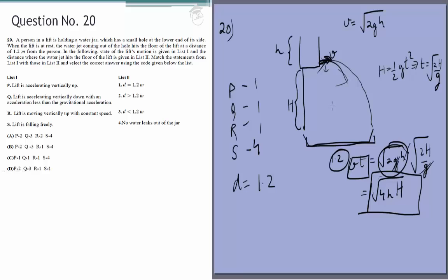So the answer in this case will be 1, 1, 1, and 4, which is option C. This completes the physics portion of the 2014 JEE Advanced Paper 2. Thank you.